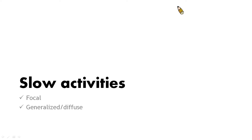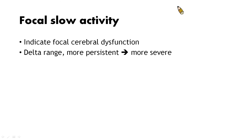In the first part, we talk about slow activities, which include focal slow and generalized or diffuse slowing. Focal slow activity indicates focal cerebral dysfunction, especially slow activity in the delta range, or more persistent slow waves, which usually means a more severe lesion.